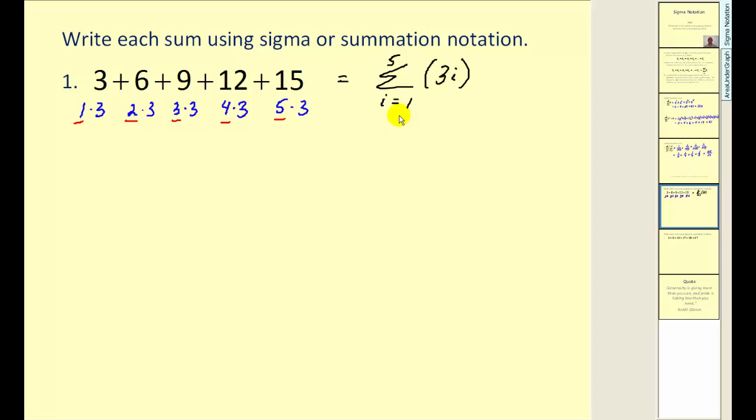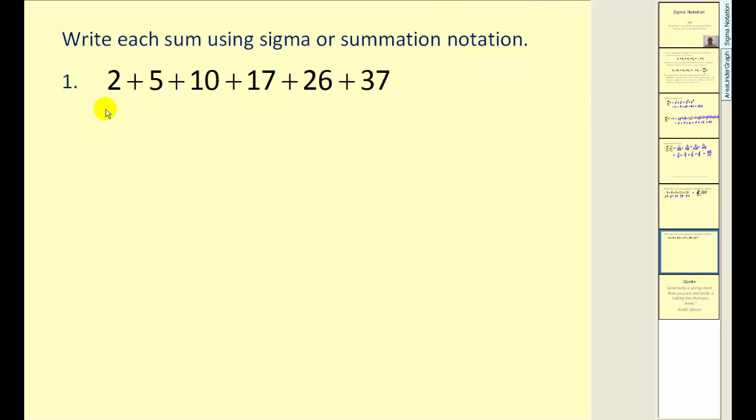Again, we can check this, but we can see from our work here that it matches perfectly. When i is equal to one, we'd have 3 times 1, or 3. When i is equal to two, 3 times 2 is 6, and so on. And they're not all quite this straightforward. For example, we take a look at this problem. We do see a pattern here. We're adding 3, here we're adding 5, and we're adding 7. But that doesn't really help us come up with the formula.